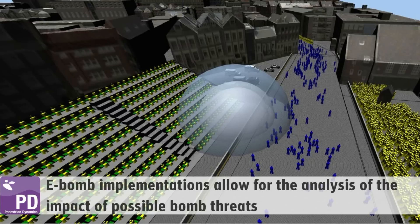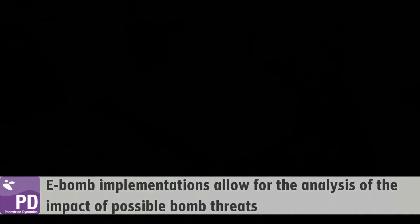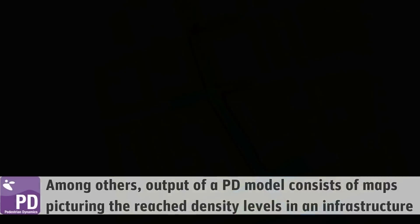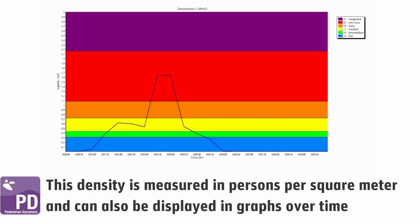E-bomb implementation allows for the analysis of the impact of possible bomb threats. Among others, output of a Pedestrian Dynamics model consists of maps depicting the crowd density levels within an infrastructure. This density is measured in persons per square meter and can also be displayed in graphs over time.